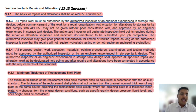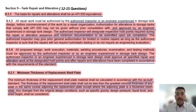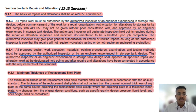Let's start the API 653 training course. This course covers Chapter 9: Tank Repair and Alteration. As explained in previous slides, repair includes minor repair and major repair. Alteration means change of shell height or installation of a new bottom. Remember the 12-inch rule — if you don't, please go back to previous slides. From Section 9 you can expect 12 to 15 questions, including both closed book and open book.